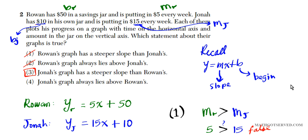For problem number two, you just need to remember how to convert word problems into linear equations using the slope and the y-intercepts. Normally, the starting amount is your y-intercept and the amount at which it grows at an interval — in this case every week — is going to be your slope. We have two scenarios here, Rowan and Jonah. The first task is to convert the situation into a slope-intercept form equation for Rowan and Jonah.